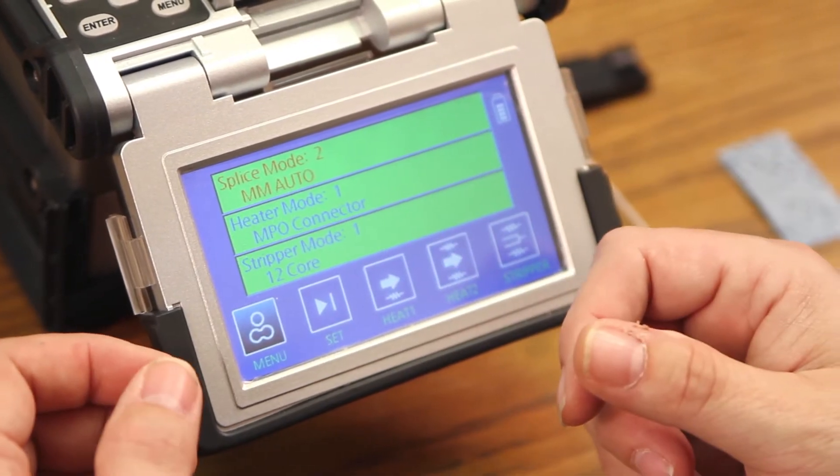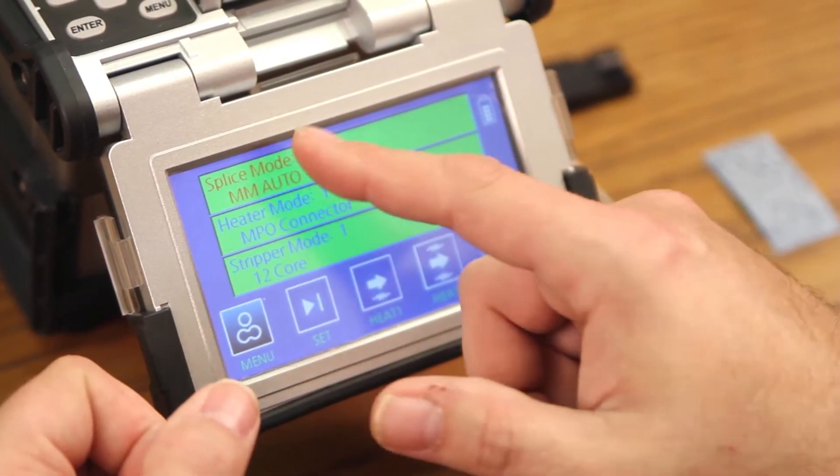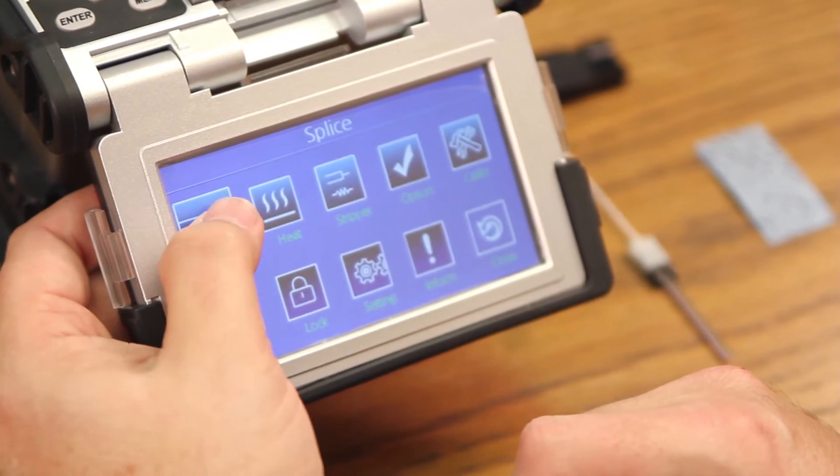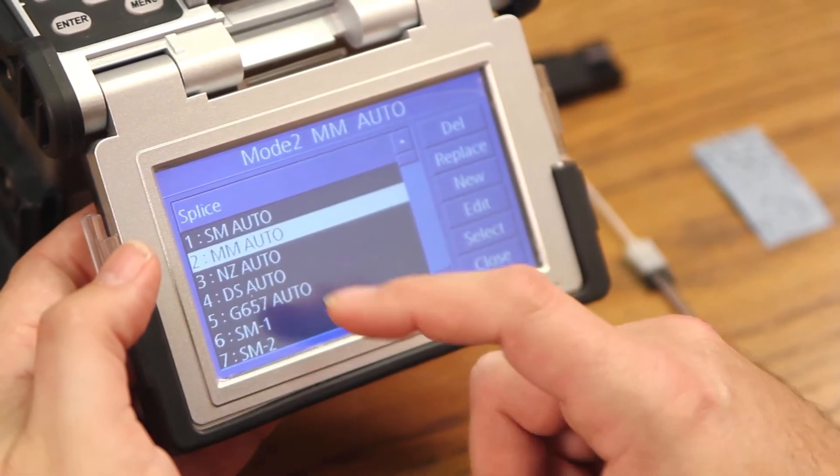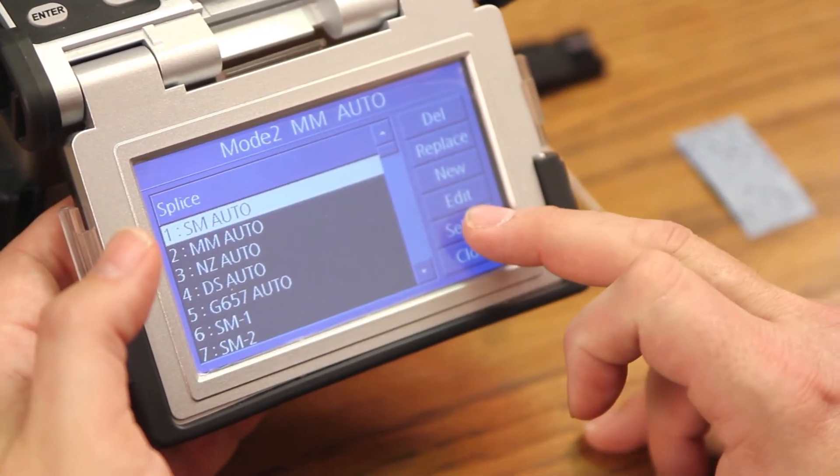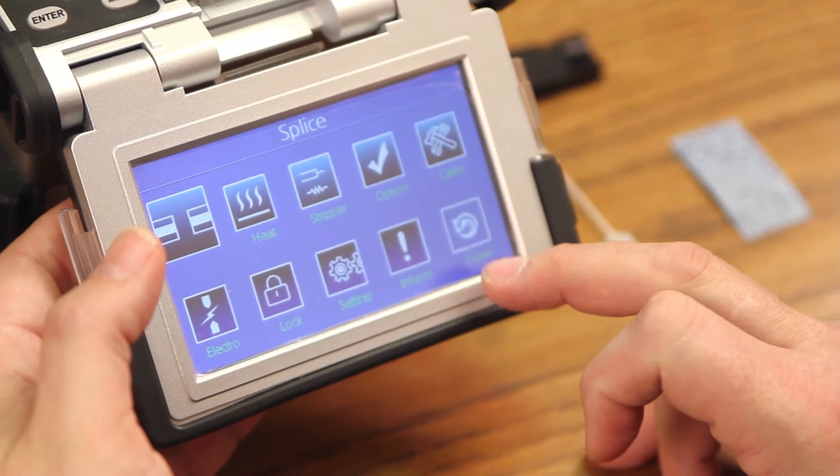In this video, we will be doing a 12-fiber single mode, so we need to change the splice mode. Go into main menu, splice. I'll go to single mode auto, select, close, close.